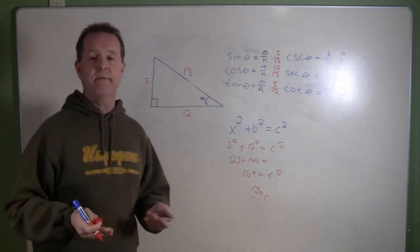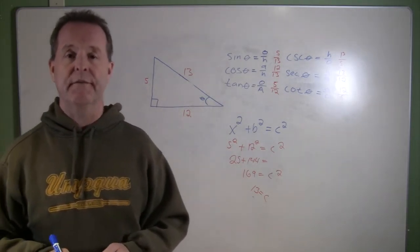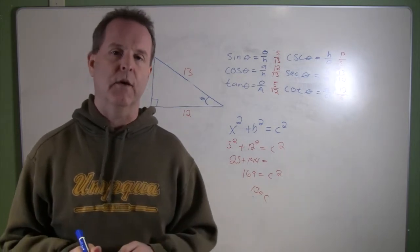And so there's how you can find the six trigonometric functions, given the start that we had with this particular right triangle.